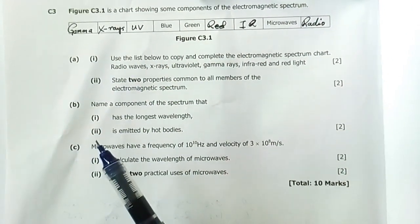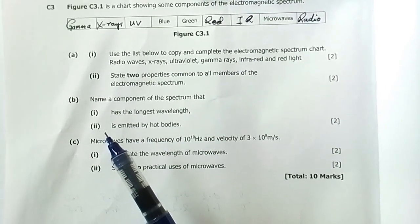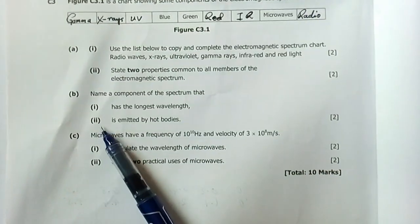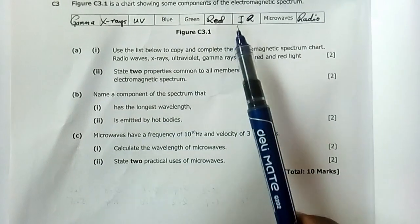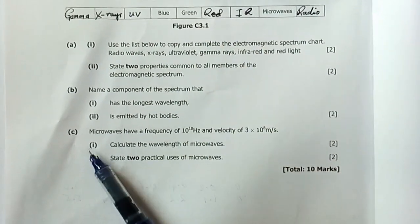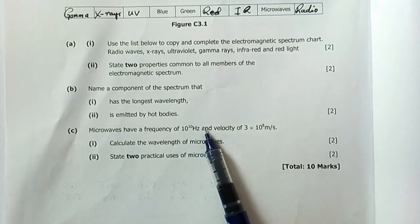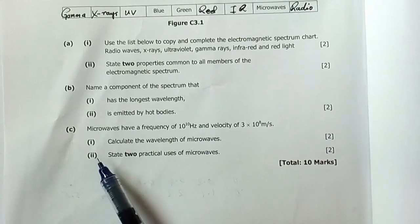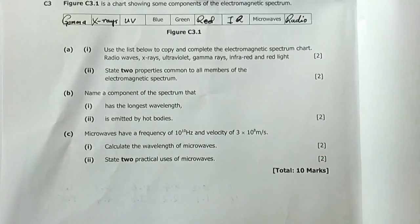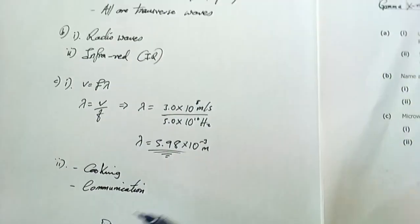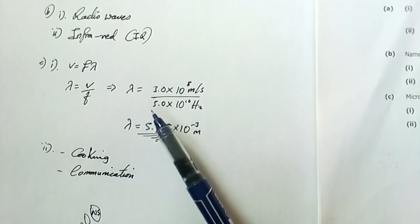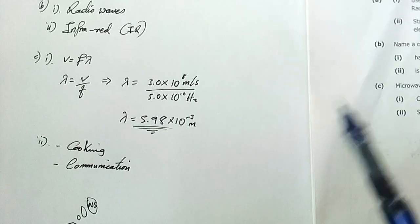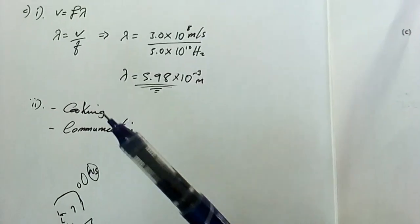The next question is: name the component of the spectrum that has the longest wavelength. Radio has the longest wavelength. Number two: is emitted by hot bodies. Infrared is emitted by hot bodies. Number C: microwaves have the frequency of this much and velocity of this much, which is the speed of light. One: calculate the wavelength of microwaves. Two: state two practical uses of microwaves. Let's look at those answers. Here I simply use the wave formula to calculate the wavelength of microwaves, and I do my mathematics. It comes out as 5.98 exponential minus three meters. Then uses of microwaves: cooking and communication.